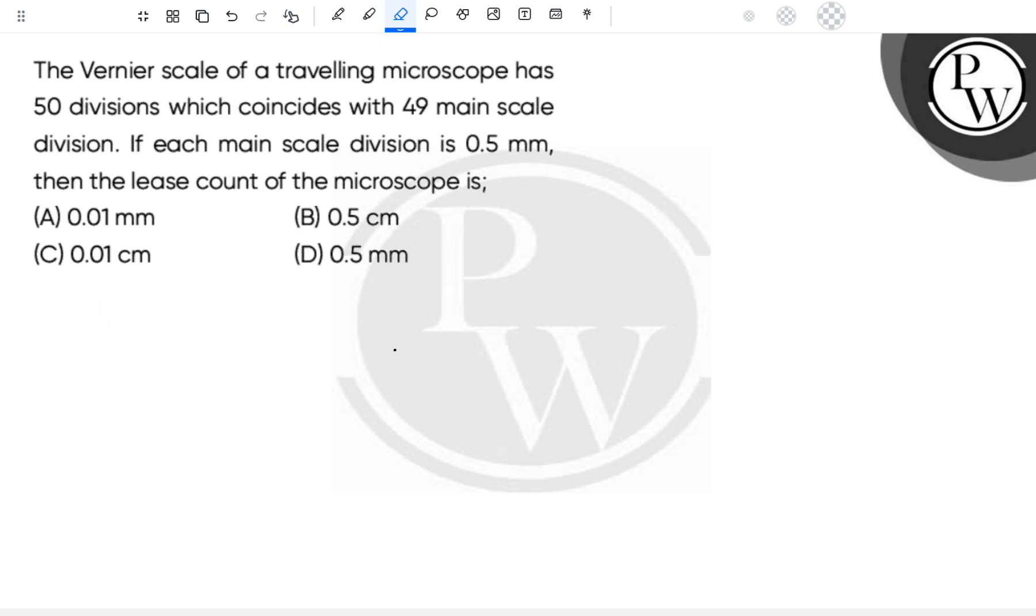Least count kya hota hai? Least count hota hai main scale division upon number of Vernier scale division.